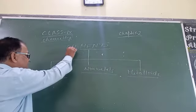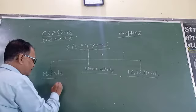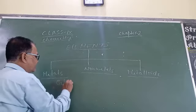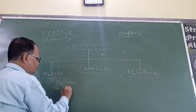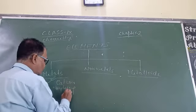The elements having tendency to make cations by losing electrons are called metals.